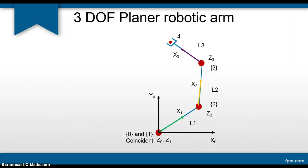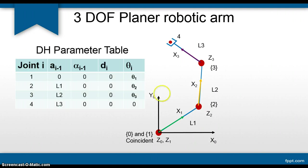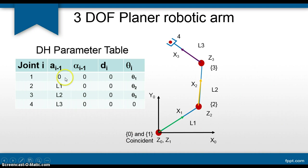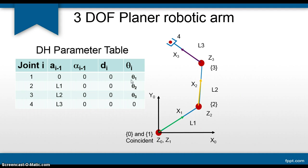Now let us prepare the DH table, which is the tabulated format showing all four DH parameters: link length a, link twist alpha, joint offset d, and joint angle theta. For joint number one, coordinate systems zero and one are coincident, so link length is zero. Both z-axes are coincident so link twist alpha is zero. This joint is revolute so joint offset d is zero, and we represent the rotation as theta1.